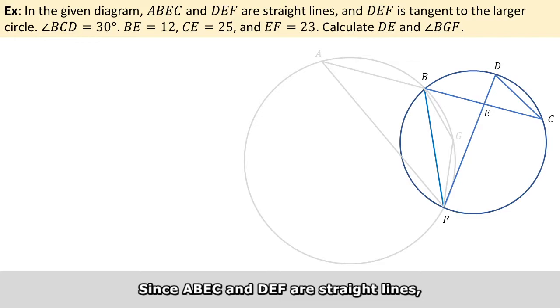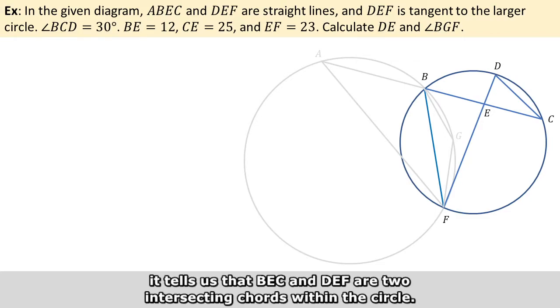Since ABEC and DEF are straight lines, it tells us that BEC and DEF are two intersecting chords within the circle.